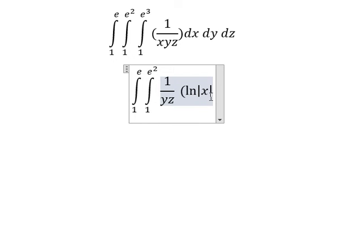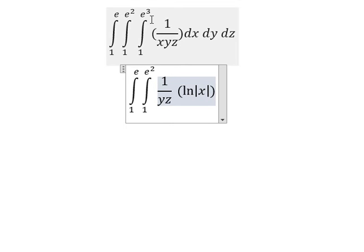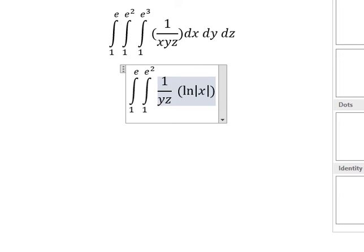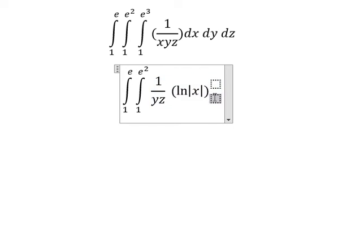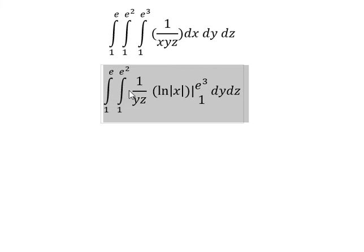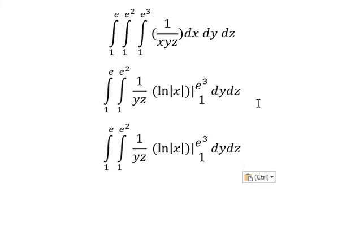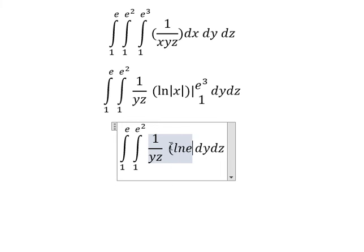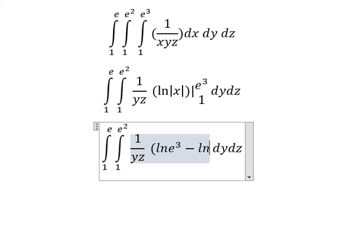And now we have the bounds from 1 to e to the power of 3. So we put e to the power of 3 here and 1 here. So we have ln of e to the power of 3 minus ln 1.